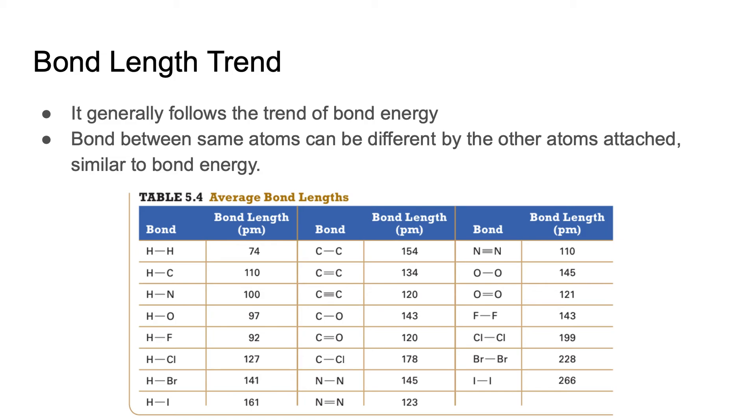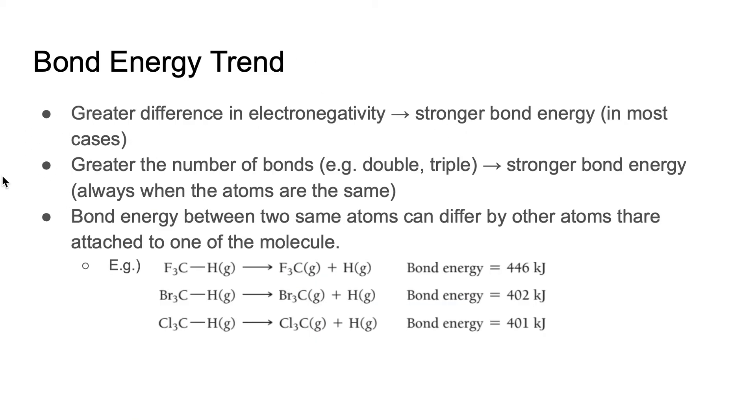The bond length trend follows the inverse of the trend of bond energy. Greater difference in electronegativity means shorter bond length. Atoms forming bonds outside the bond that we are trying to describe can impact the bond length, despite having the same two atoms. So it follows every trend that we have described, but it's inversely proportional.